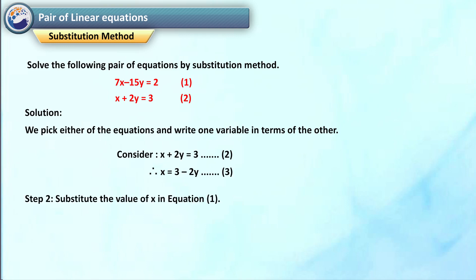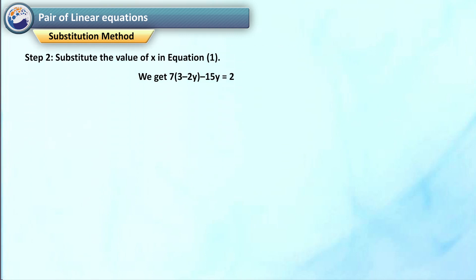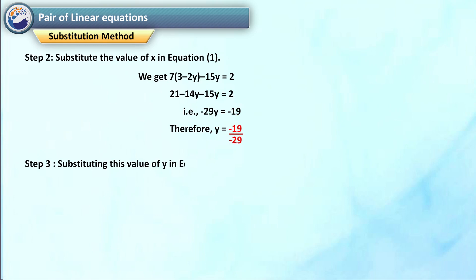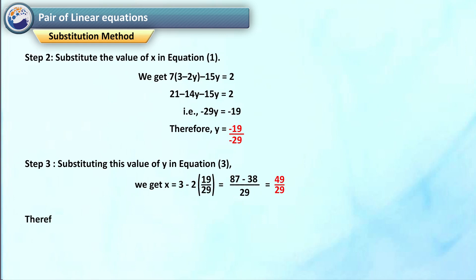Substituting the value of x in equation 1, we get 7 into 3 minus 2y minus 15y is equal to 2, that is 21 minus 14y minus 15y is equal to 2. We get minus 29y is equal to minus 19. Therefore y is equal to 19 upon 29. Substituting this value of y in equation 3, we get x is equal to 3 minus 2 into 19 upon 29, that is equal to 49 upon 29. Therefore the solution is x is equal to 49 upon 29 and y is equal to 19 upon 29.